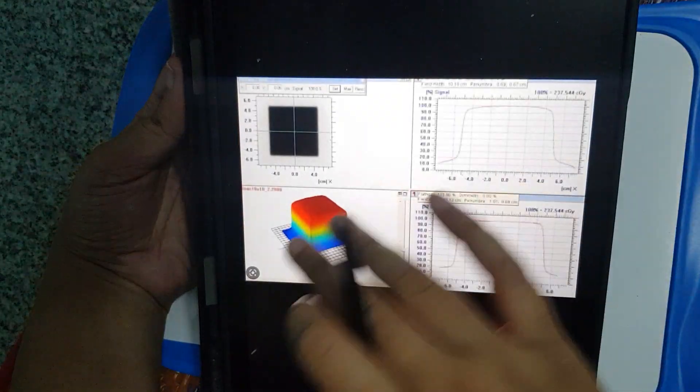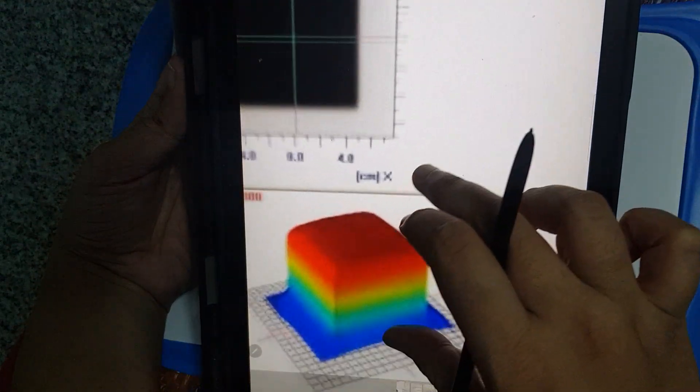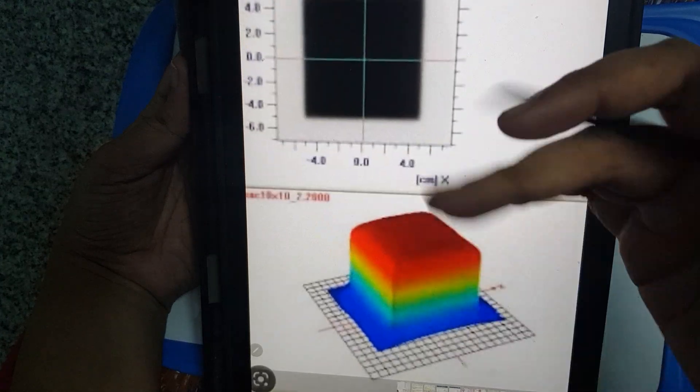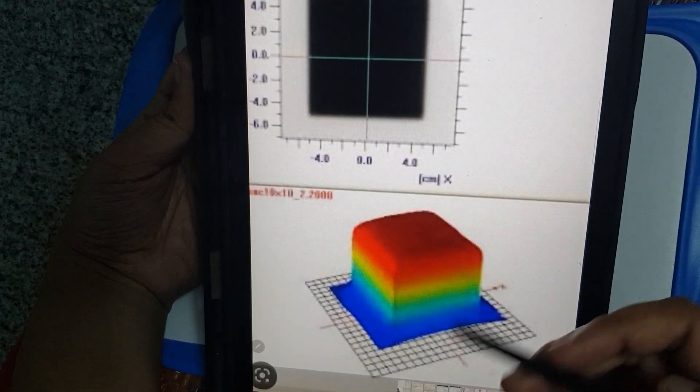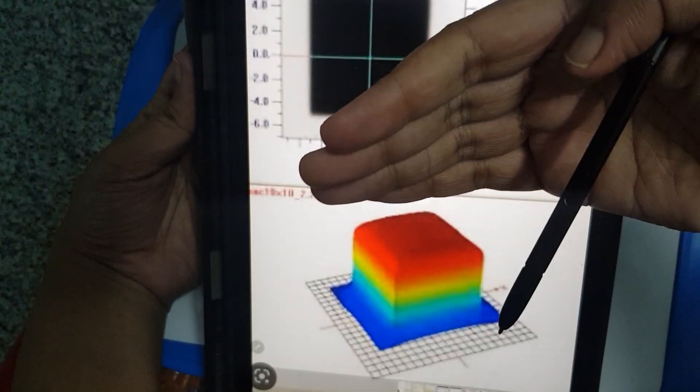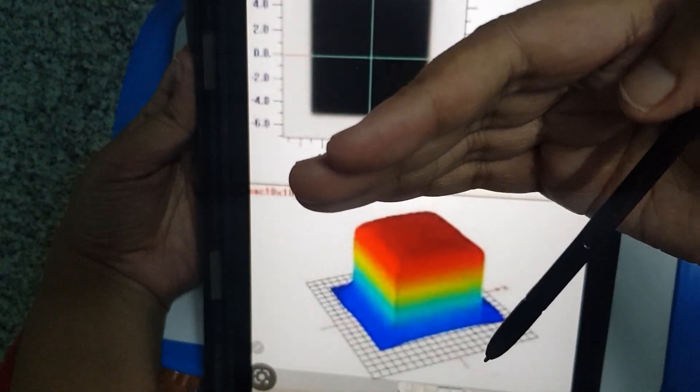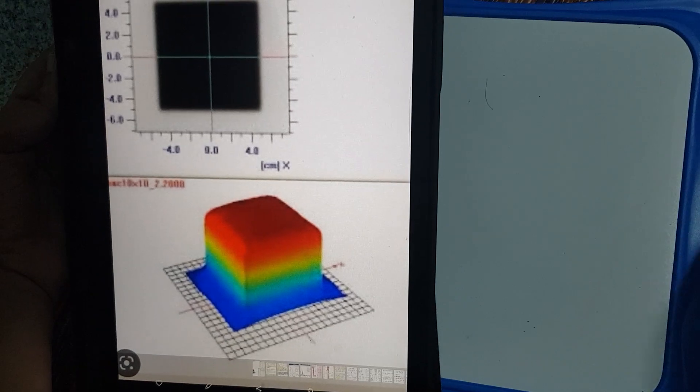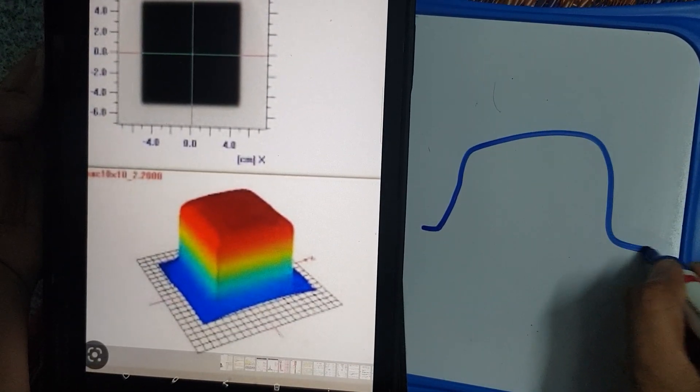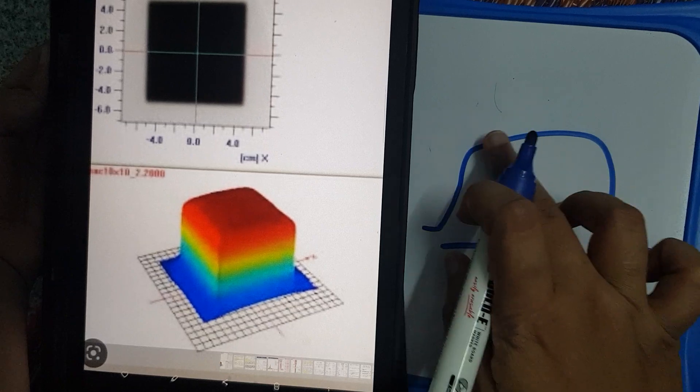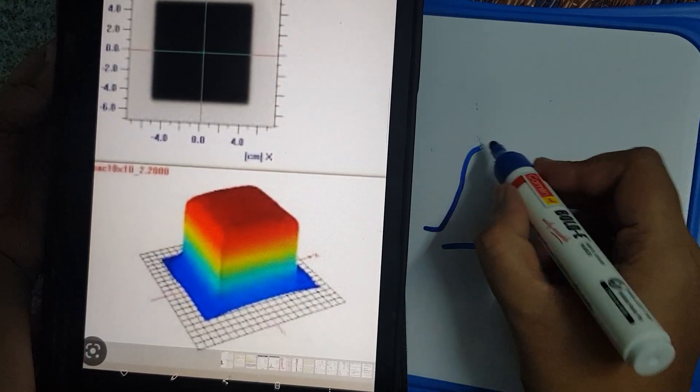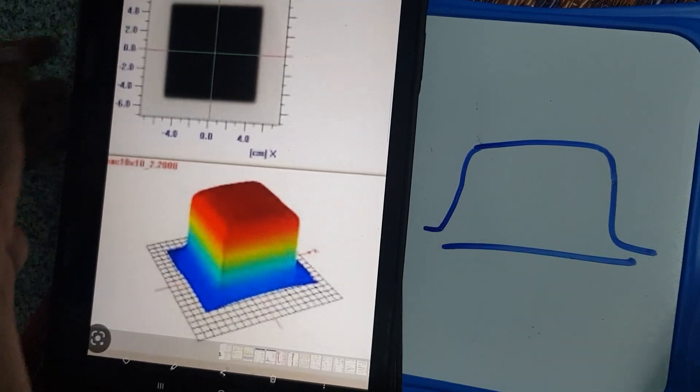If you see the 3D beam profile, it will look something like this. This is the 3D beam profile. Now if you cut, if you take a 2D section of it, is when we get our proper beam profile. Like that, whatever we have studied, this will be more flat.